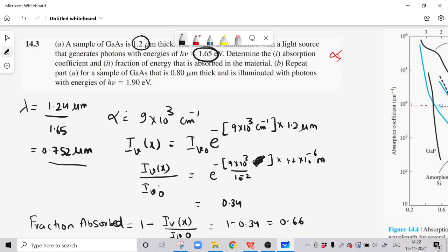For the next problem, for part B, you have to calculate lambda first, which is equal to 1.24 upon 1.90. You will get lambda as 0.635 and alpha as 2.6 times 10 raised to 4 per centimeter from the graph. From there you just apply this formula, do 1 minus, and you will get the fraction of energy absorbed in the material as 0.96.